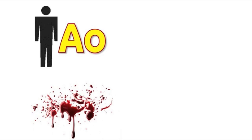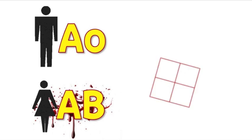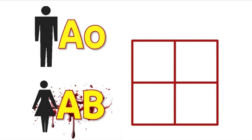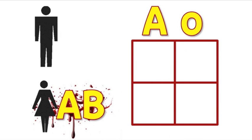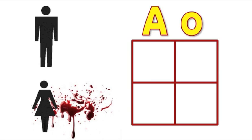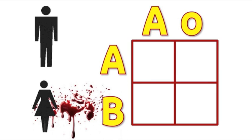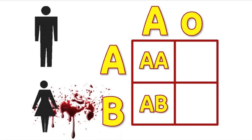Predicting what offspring will inherit from their parents can be done through the use of a Punnett square. Let's look at an example. In this case, our father's genes are AO and our mother's genes are AB. Remember, when you fill out a Punnett square, each square represents a possible gene combination that you can inherit.